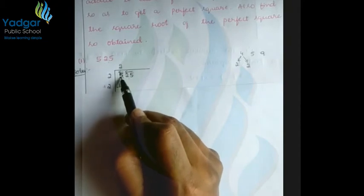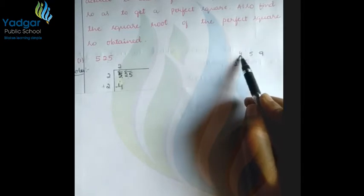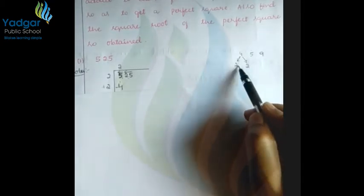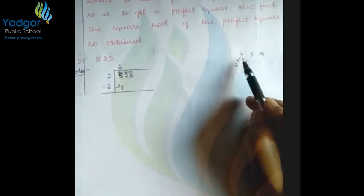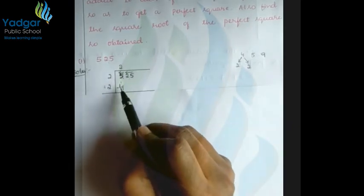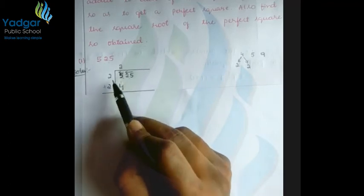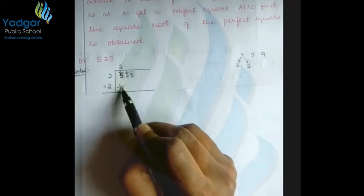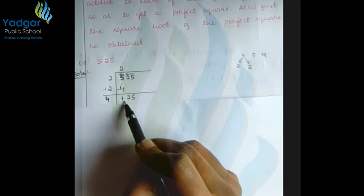The nearest square numbers to 5 are 4 and 9. Square root of 4 is 2, and 2×2=4. Square root of 9 is 3, and 3×3=9. Since 4 is the nearest perfect square less than 5, we take 2 as our first digit. We subtract: 5 minus 4 equals 1.